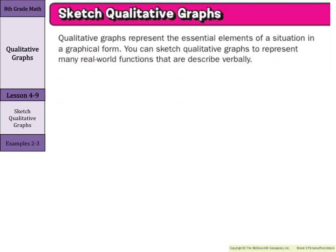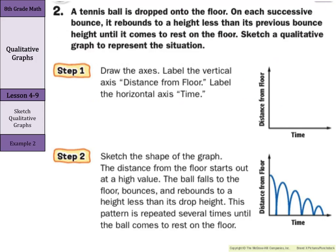Now that we've analyzed qualitative graphs, we need to be able to sketch qualitative graphs. Qualitative graphs represent the essential elements of a situation in graphical form. You can sketch qualitative graphs to represent many real-world functions that are described verbally. A tennis ball is dropped onto the floor. On each successive bounce, it rebounds to a height less than its previous bounce until it comes to rest on the floor.